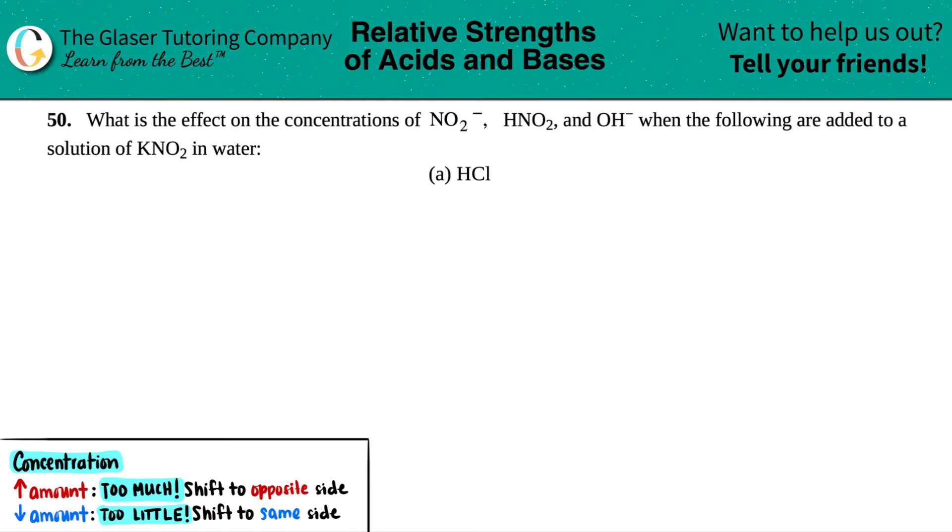Number 50. What is the effect on the concentrations of NO2 minus, HNO2, and OH minus when the following are added to a solution of KNO2 in water? Letter A. Okay, so in this case, we have to know what's going on when we add HCl to a solution of KNO2 in water.